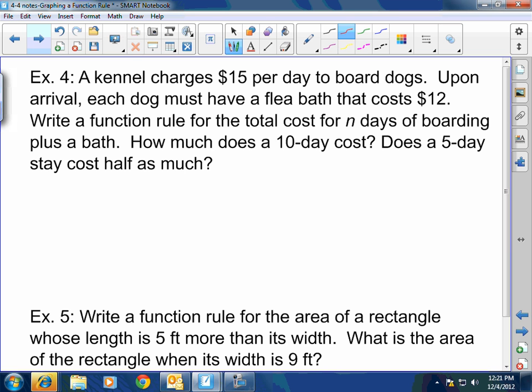A kennel charges $15 per day to board dogs. Upon arrival, each dog must have a flea bath that costs $12. Write a function rule for the total cost of N days of boarding plus a bath. And then, second question, how much does a 10-day cost? And then, does a 5-day cost half as much as a 10-day? So, okay, first thing, we're going to write the function. What is my independent variable and my dependent variable?